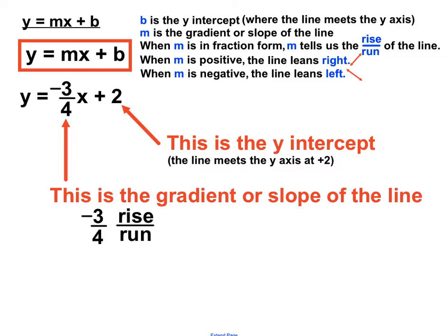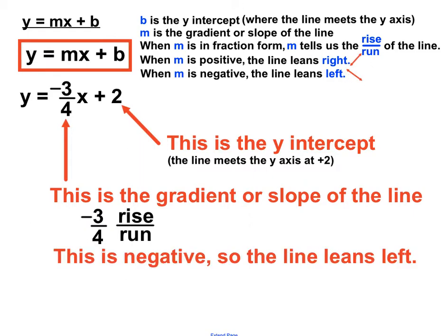And our last piece of information, we need to figure out or recognize whether this line, we expect it to lean to the right or the left. Now you can see that that m number, the number in front of the x, is a negative. And so this rule up here tells us that we'd expect that line to lean to the left on this occasion. So it's a negative m number in front of the x, so the line will lean to the left.